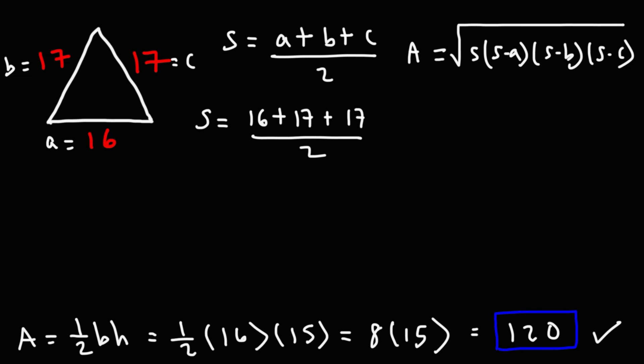So, it's going to be 16 plus 17 plus 17 divided by 2. 16 plus 17, that's 33. Let's do it this way. Let's add 17 plus 17 first. 17 plus 17 is 34. And 16 plus 34 is 50. Half of 50 is 25. So, our s value is 25.